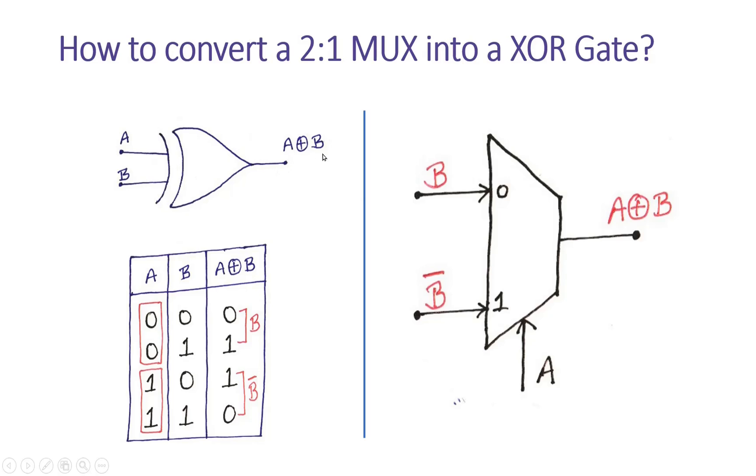The output is A XOR B. This is its truth table: when A is 0 and B is 0, output is 0; when A is 0 and B is 1, output is 1; when A is 1 and B is 0, output is 1; when A is 1 and B is 1, output is 0. Only when one of the inputs is 1, the output is 1; otherwise it is 0.